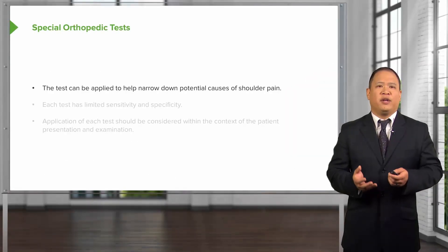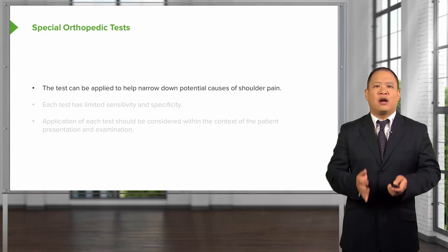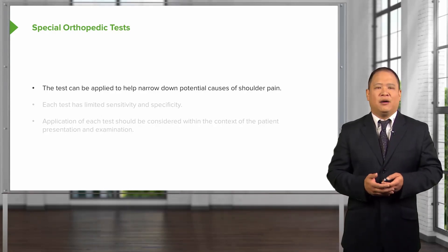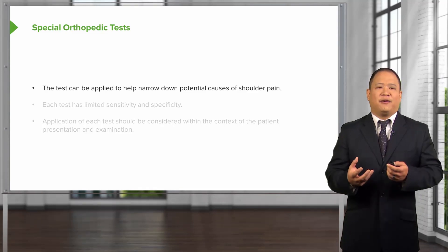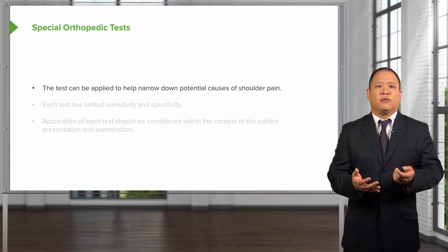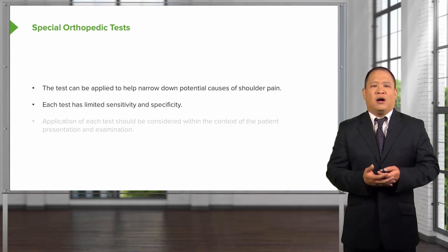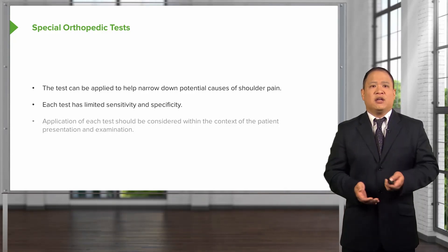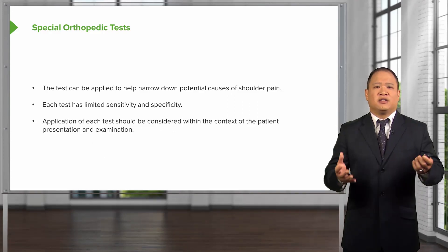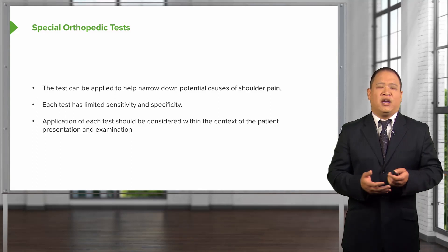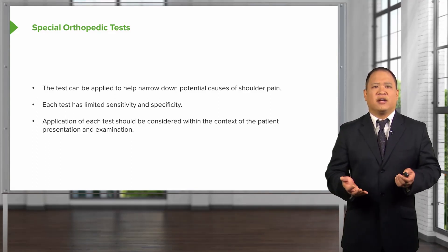Special orthopedic tests can be utilized to help narrow down the differential diagnosis. These tests have been developed to identify and elicit certain responses to confirm clinical suspicion, but they do have limited sensitivity and specificity. You need to take them in the context of the full patient presentation and examination, and apply additional imaging as needed to confirm your suspected diagnosis.